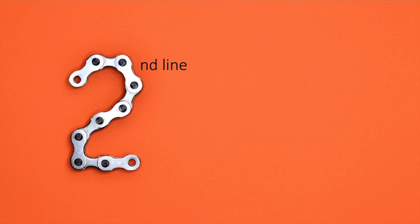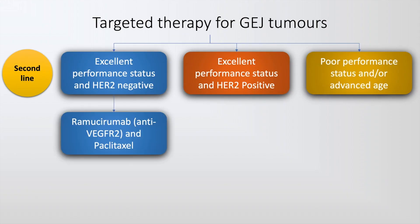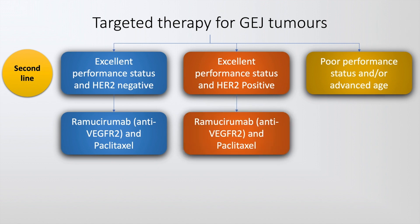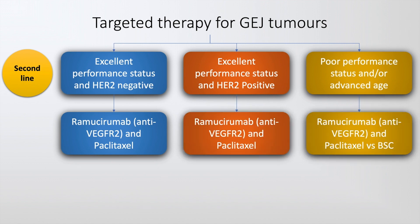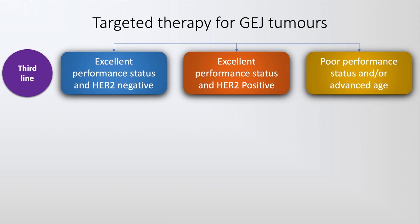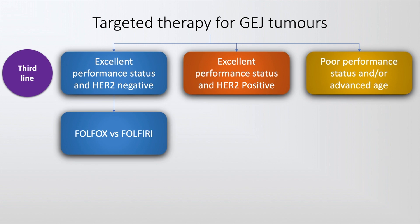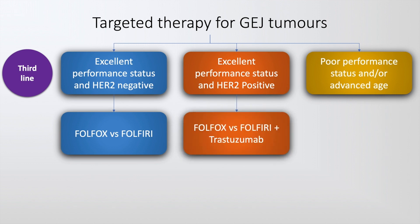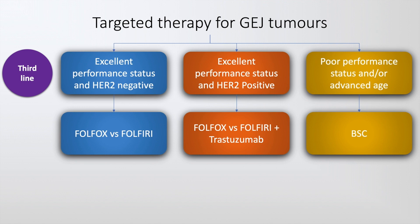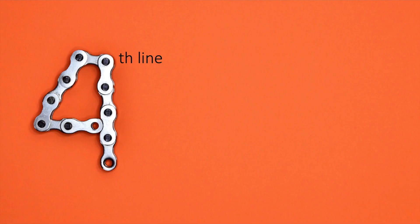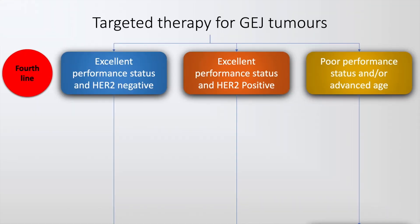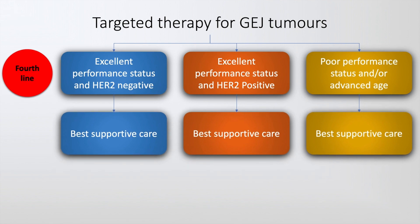The second-line therapy for gastroesophageal junction tumors consists of ramucirumab, which is an anti-VEGFR2 antibody, along with paclitaxel, generally given for patients who are both HER2 positive and negative. Patients with poor performance status may be considered for best supportive care. Third-line therapy for patients with excellent performance status and HER2-negative status consists of FOLFOX vs. FOLFIRI; trastuzumab is added for HER2-positive patients. Fourth-line management consists only of best supportive care.